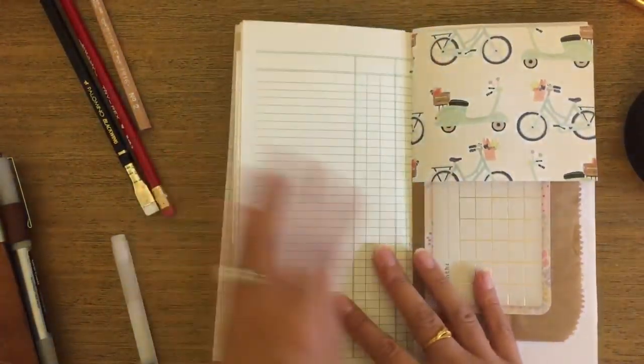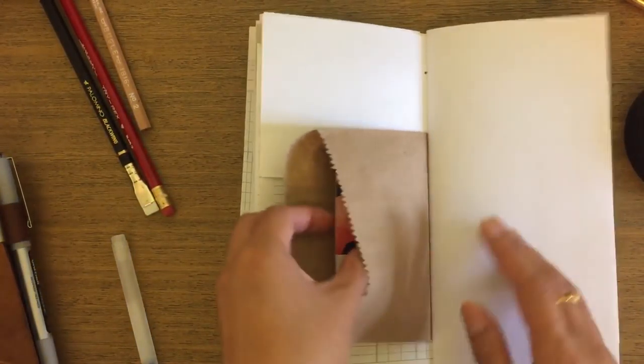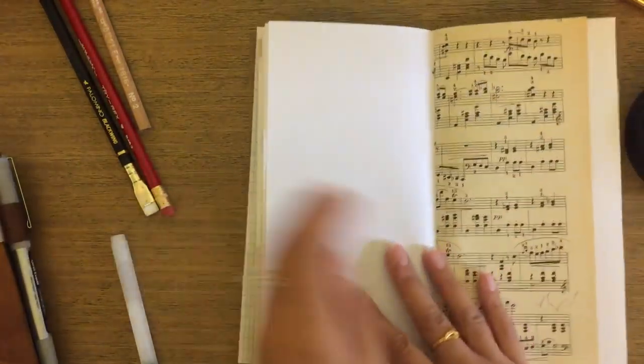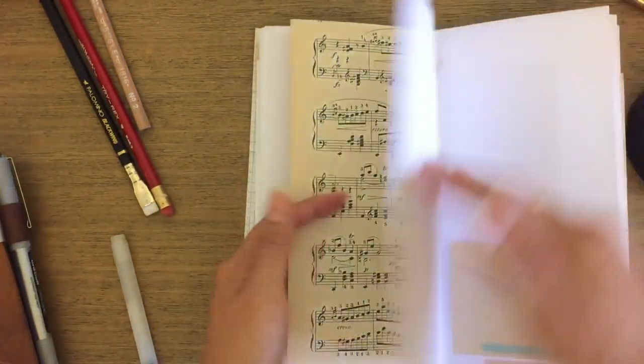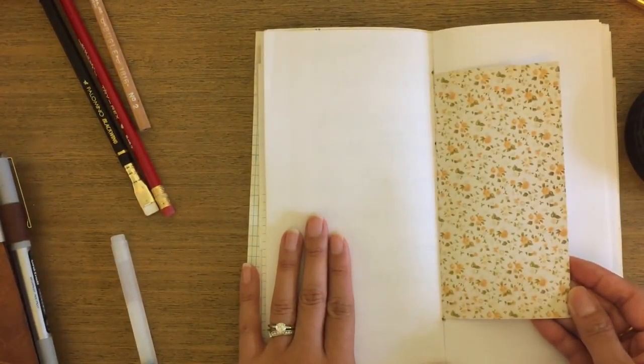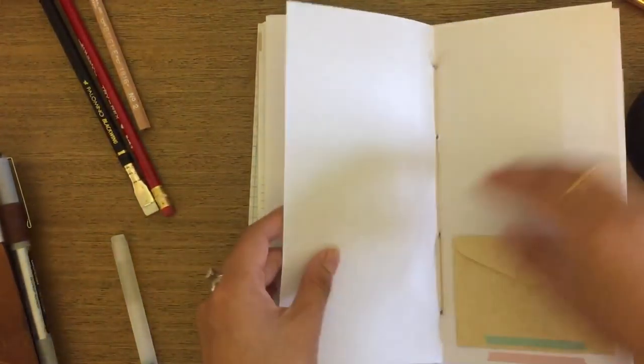I like them kind of sloppy. It doesn't have to be perfect for me when I make junk journals. Tuck spot here, some more print paper, so lots of spaces to write.